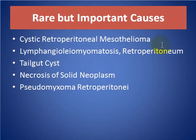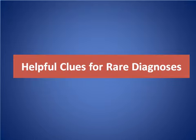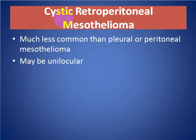Rare but important causes include: cystic retroperitoneal mesothelioma, lymphangioleiomyomatosis in the retroperitoneal region, tailgut cyst, necrosis of solid tumor, and pseudomyxoma retroperitonei. Cystic retroperitoneal mesothelioma is much less common than pleural and peritoneal mesothelioma and may be unilocular.